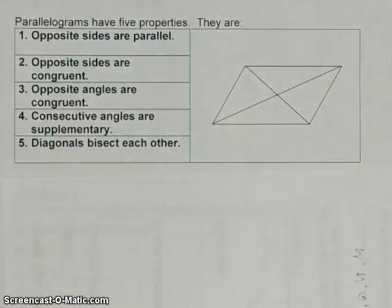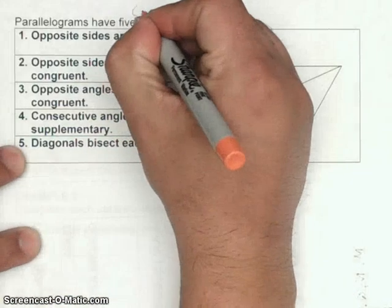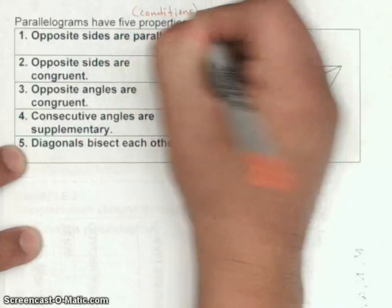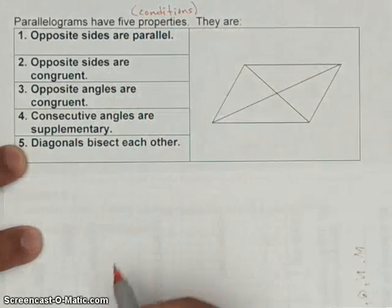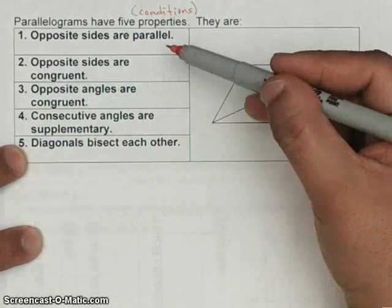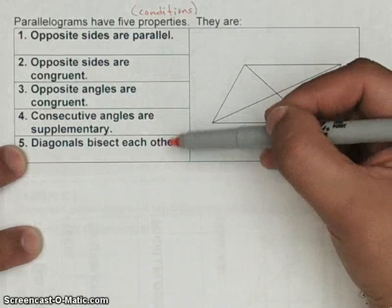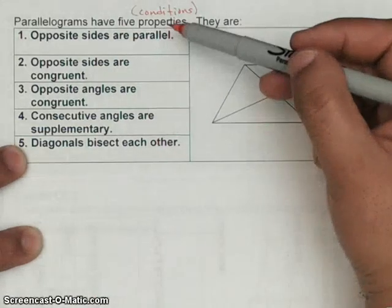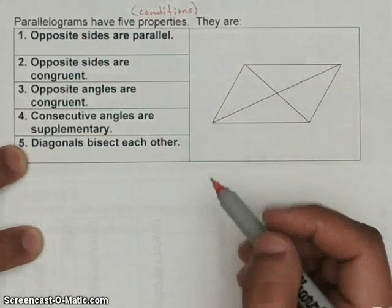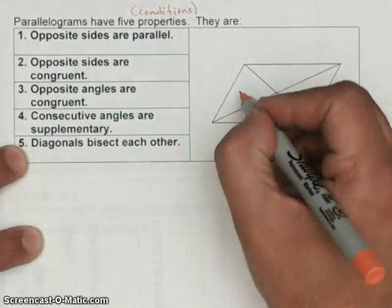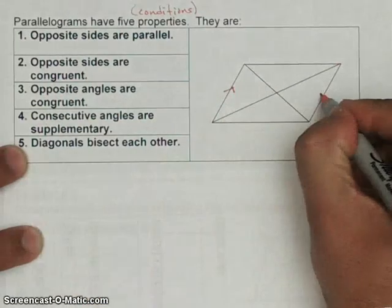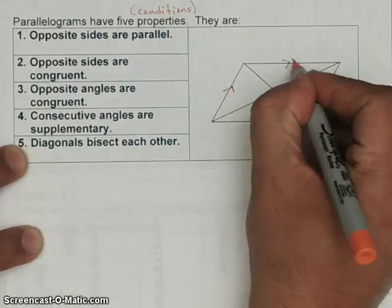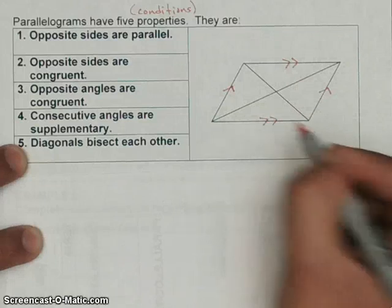Now we're going to talk about some properties — these might also be called conditions — that define a parallelogram. If it's a parallelogram, these five things are going to be true, and if these things are true, you can say it's a parallelogram. First: opposite sides are parallel, so this side is parallel to this side, and this one up here is parallel to this one at the bottom. Also, opposite sides are congruent, meaning this side has the same length as that side.